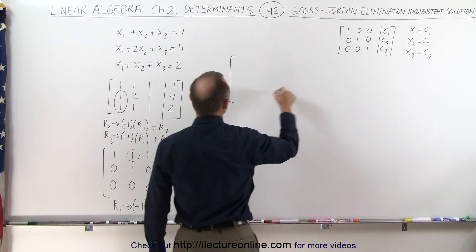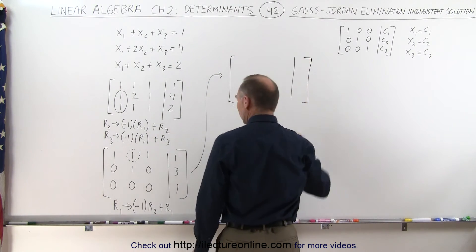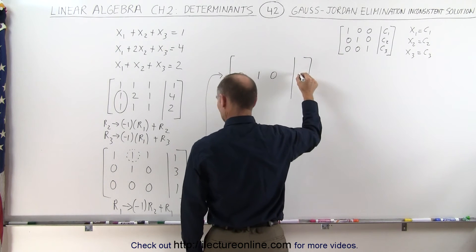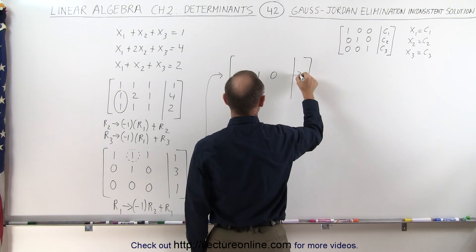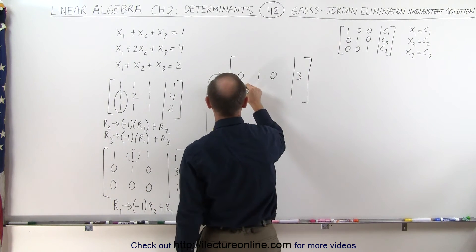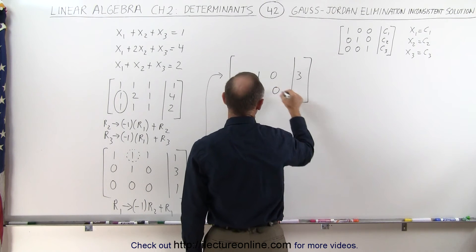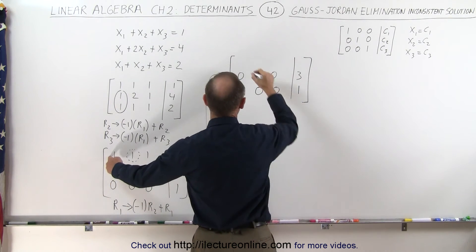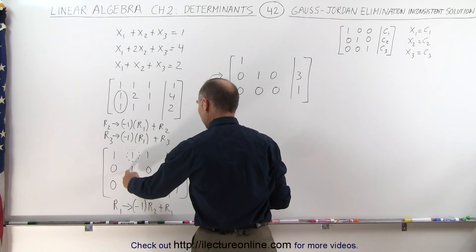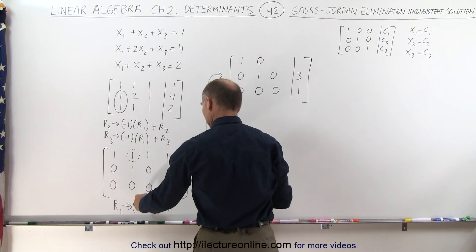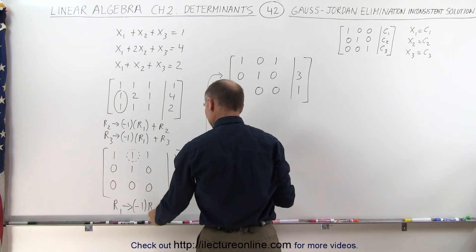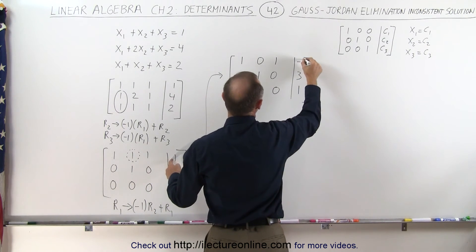When we do that, we get the following. The second row doesn't change: 0, 1, 0, 3. The third row doesn't change — that's the inconsistent row: 0, 0, 0, 1. For the first row: 1 stays; negative 1 plus 1 is 0; negative 0 plus 1 stays 1; and negative 3 plus 1 becomes negative 2.